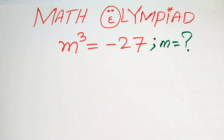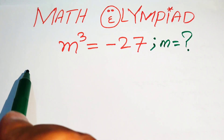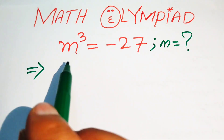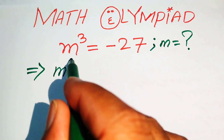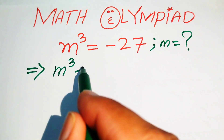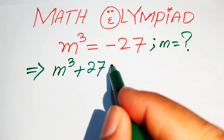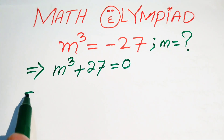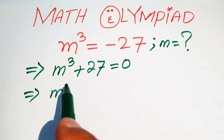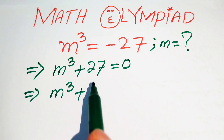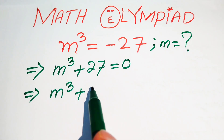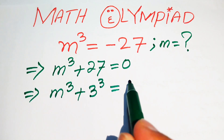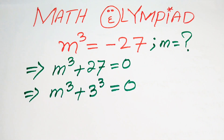The very first thing we do is move minus 27 to the left hand side, so it is written as m cubed plus 27 equals 0. We then rewrite this equation as m cubed, and we make the prime factorization of 27. We know that its prime factors give us 3 cubed, so we have m cubed plus 3 cubed equals 0.